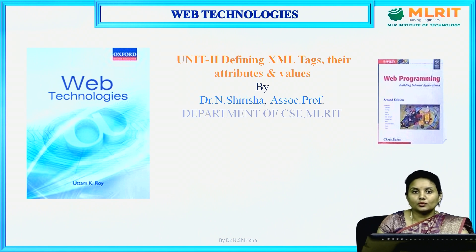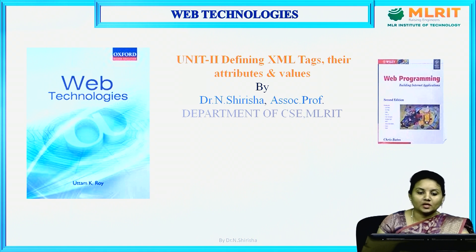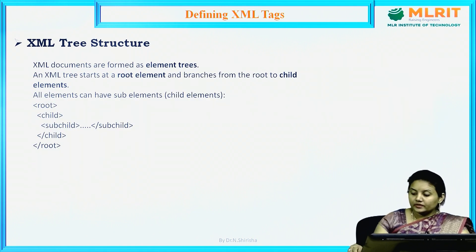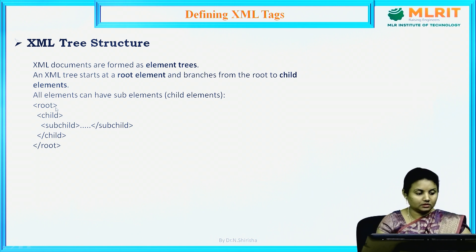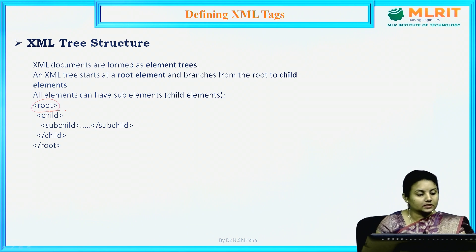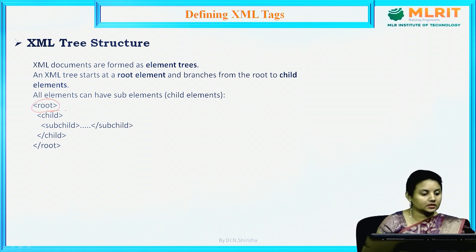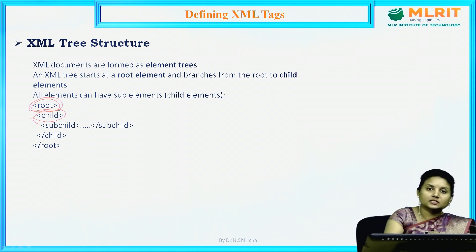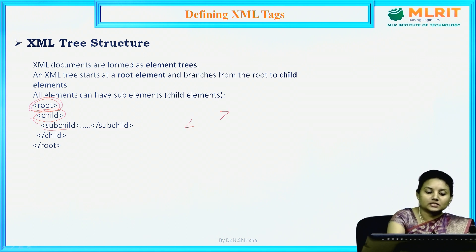In this session I want to give you a summary on how to define the elements, its attributes, and how these elements and attributes differ. Every XML will have a root tag, and this root tag will have one or more child tags and sub-child tags. This root tag is an element, the child is an element, and the sub-child is an element. Whatever you write inside angular brackets is an element.